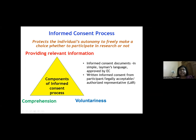Informed consent fulfills the basic ethical requirement of autonomy — protecting the individual's right to freely choose whether to participate in research. It has three components: providing relevant information, which must be comprehended by the potential participant, and thereafter voluntary agreement to participate.